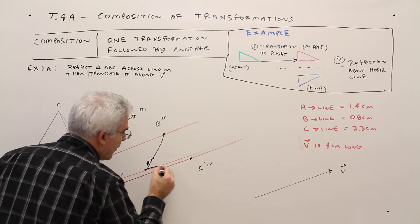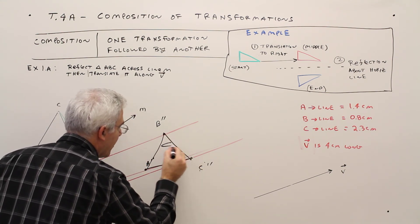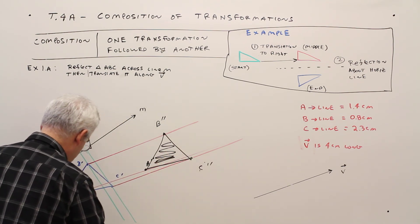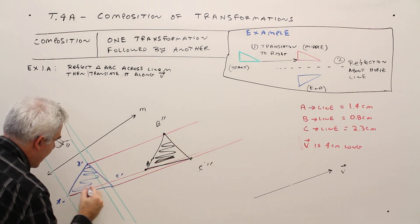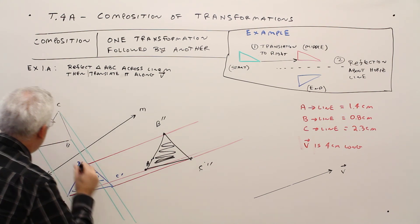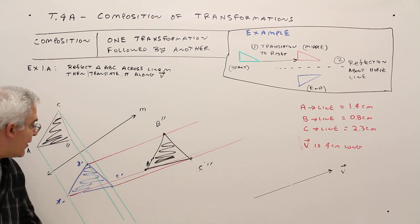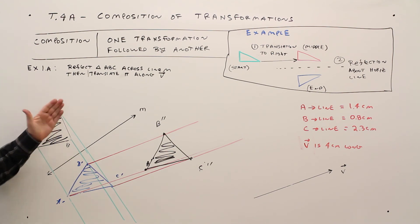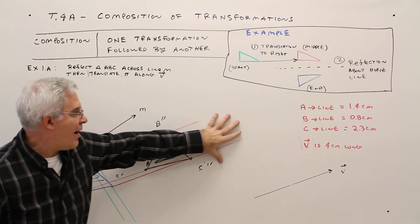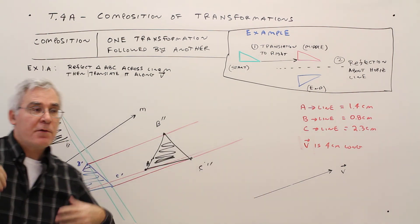Again, you can use your ruler. I'm trying to speed things up. I can shade these in. Just so you can visually see. So what happened is I took this triangle, reflected about this line, and then translated along that vector. So there you have it.